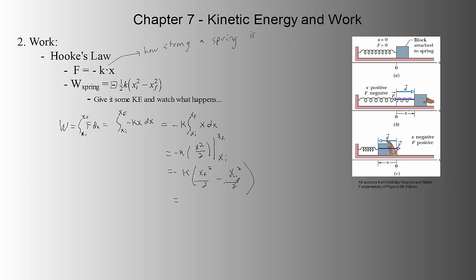Well, I'll pull out the half, so 1 half k, distribute the negative, x initial squared minus x final squared. So, the negative switches the final and the initial, so we write the initial first. And we get this right here.